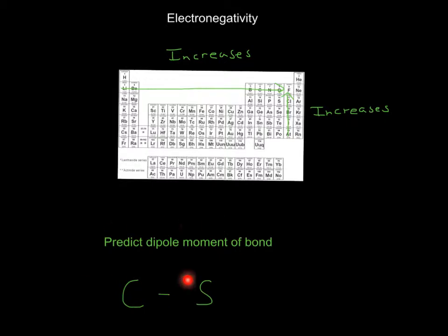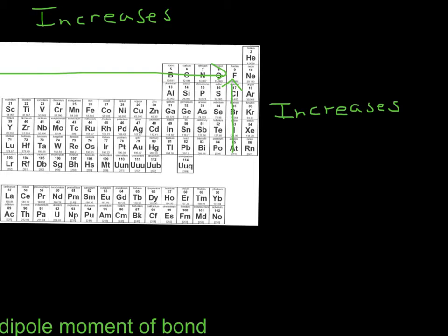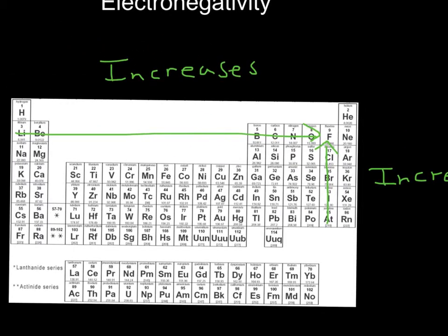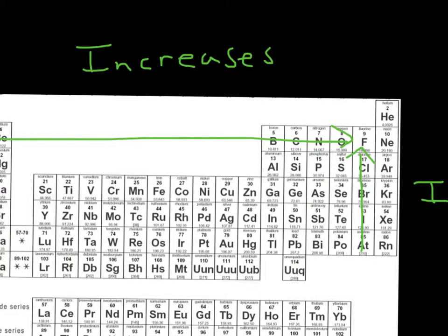Now we just predict the dipole moment of carbon and sulfur by looking at where those two are. We see that carbon and sulfur are here. Carbon increases from left to right, so carbon is right here, and sulfur increases from here.